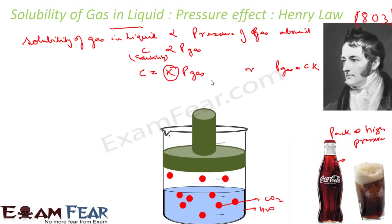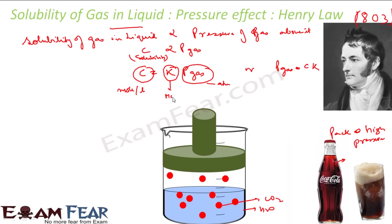So K is Henry's Law constant. It's a straightforward law: increase the pressure, and the solubility of gas in liquid increases. Think of Coca-Cola or any soda drink — when you open it, you see carbon dioxide bubbles because the drink was packed at high pressure. Increasing pressure increases solubility; decreasing pressure decreases solubility of gas in liquid.